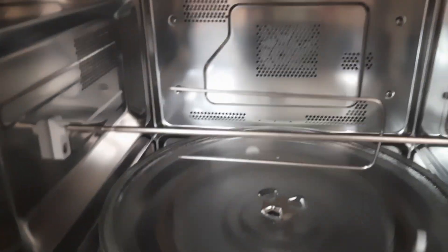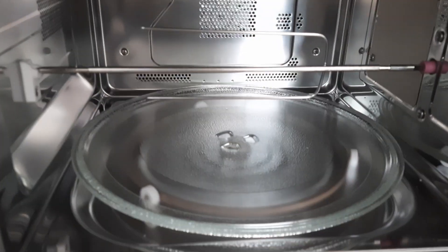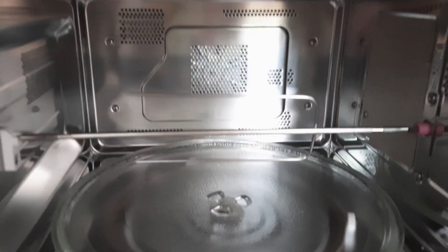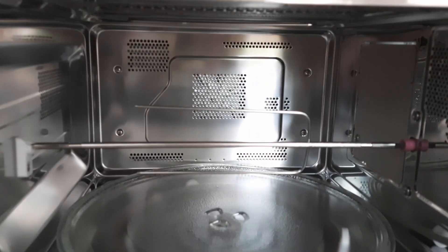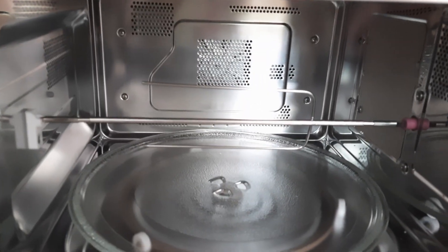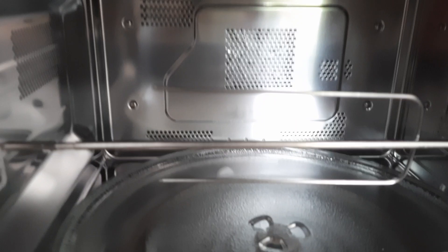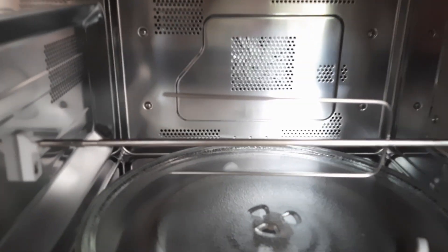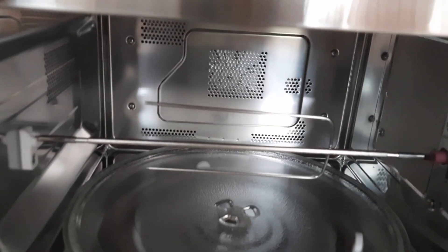Whatever paneer, vegetables, whatever you have to grill, you can just pierce it from the pointed end and then you can put it in the grill mode.